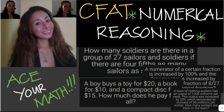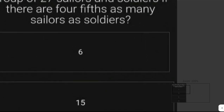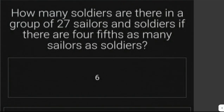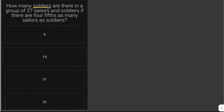Let's solve some random problems here for CFAT numerical reasoning. How many soldiers are there in a group of 27 sailors and soldiers if there are four-fifths as many sailors as soldiers? We are asked for the number of soldiers, so we let x be the number of soldiers.